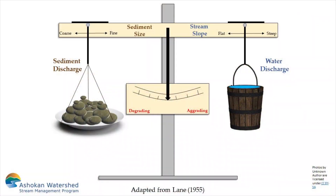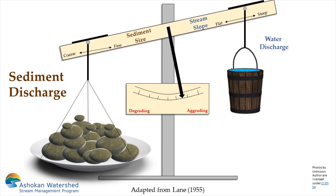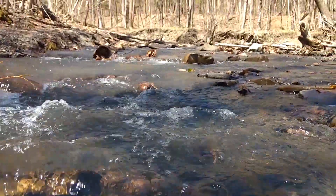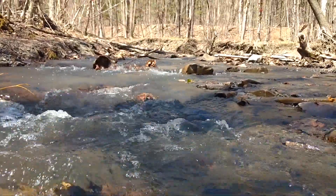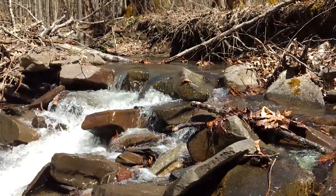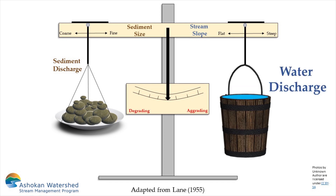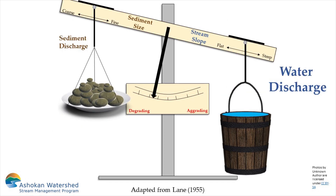Aggradation is when the scale is tipped in favor of the sediment. There is more sediment than the water can move, and more material is being delivered to an area than is being moved out, resulting in a net increase of sediment. Aggradation is often the result of excess erosion occurring somewhere upstream, and that material is being transported into an area where the water flow can't handle it.